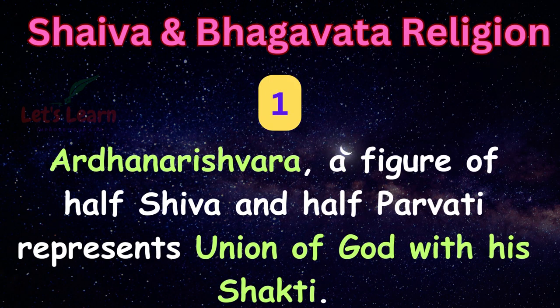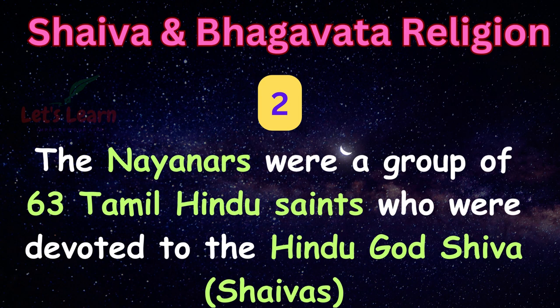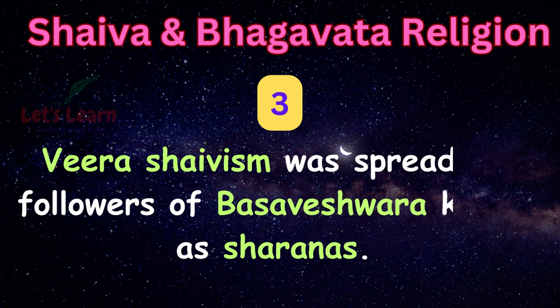Ardhanarishwara, a figure of half Shiva and half Parvati, represents the union of God with his Shakti. The Nayanas were a group of 63 Tamil Hindu saints who were devoted to the Hindu god Shiva — Shaivas. Veera Shaivism was spread by followers of Basaveshwara known as Sharanas.